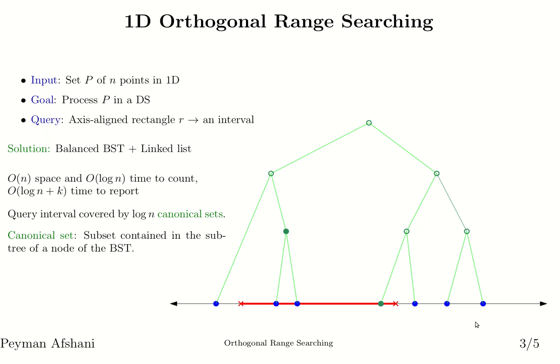The important observation here is that the query interval can be covered by log n canonical sets. In this example we are covering the query interval with only two canonical sets — this green node here and this green node here. Remember that the input points themselves are also canonical sets of size one.